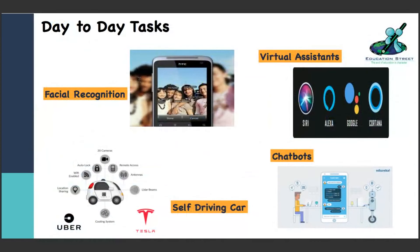Let's look at some day-to-day tasks. Facial recognition - Facebook, and even your mobile phone, identifies you. Our passwords are now facial recognition - they see your face and the phone opens up. That is AI. Virtual assistants - Siri, Alexa, Google - all fed with past information, pattern recognition, speech recognition, and they now work fabulously as assistants. Chatbots - you interact with a robot which gives you information rather than having a team of a hundred people working as a call center.